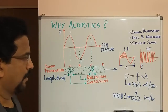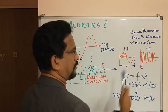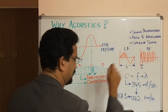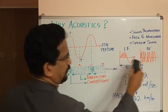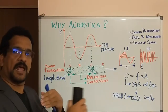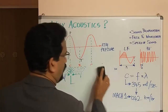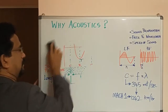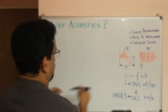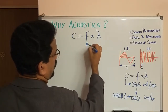Coming back to the relation between frequency and wavelength — here you can see two waves. One is more expanded where the wavelength is higher, and the other is compressed where the wavelength is lower. Low frequency will have an expanded sinusoidal wave, and high frequency will be very compressed. The speed of sound c equals frequency times wavelength — when frequency increases, wavelength decreases.